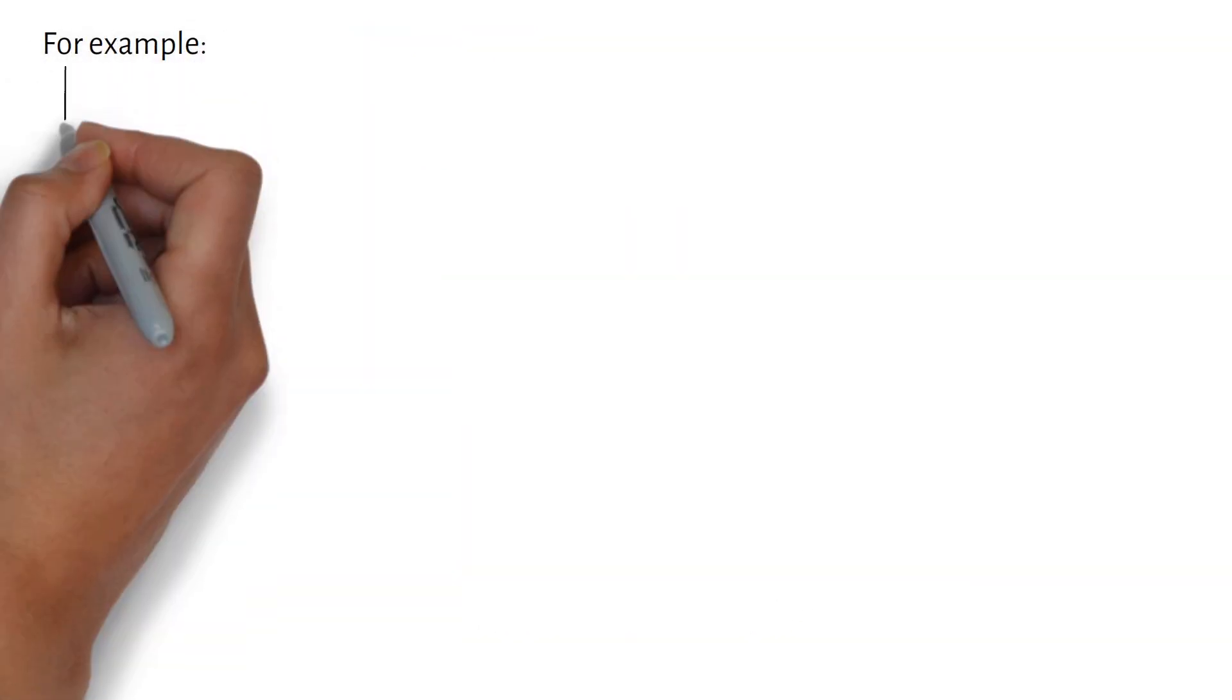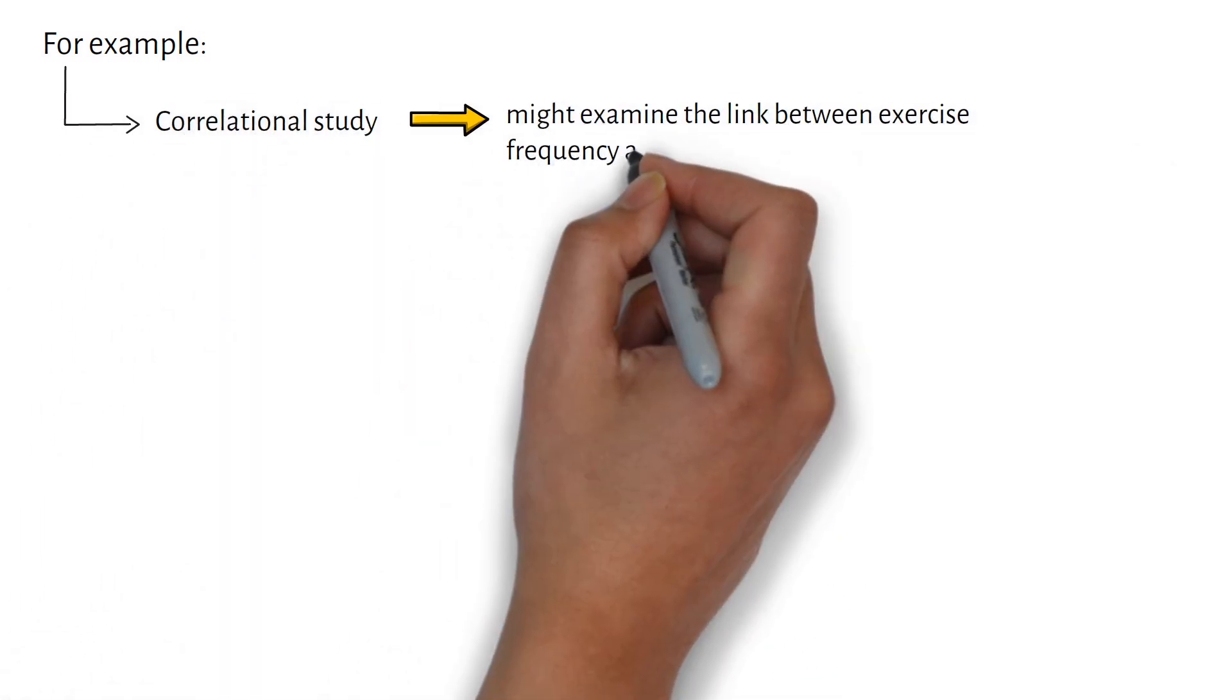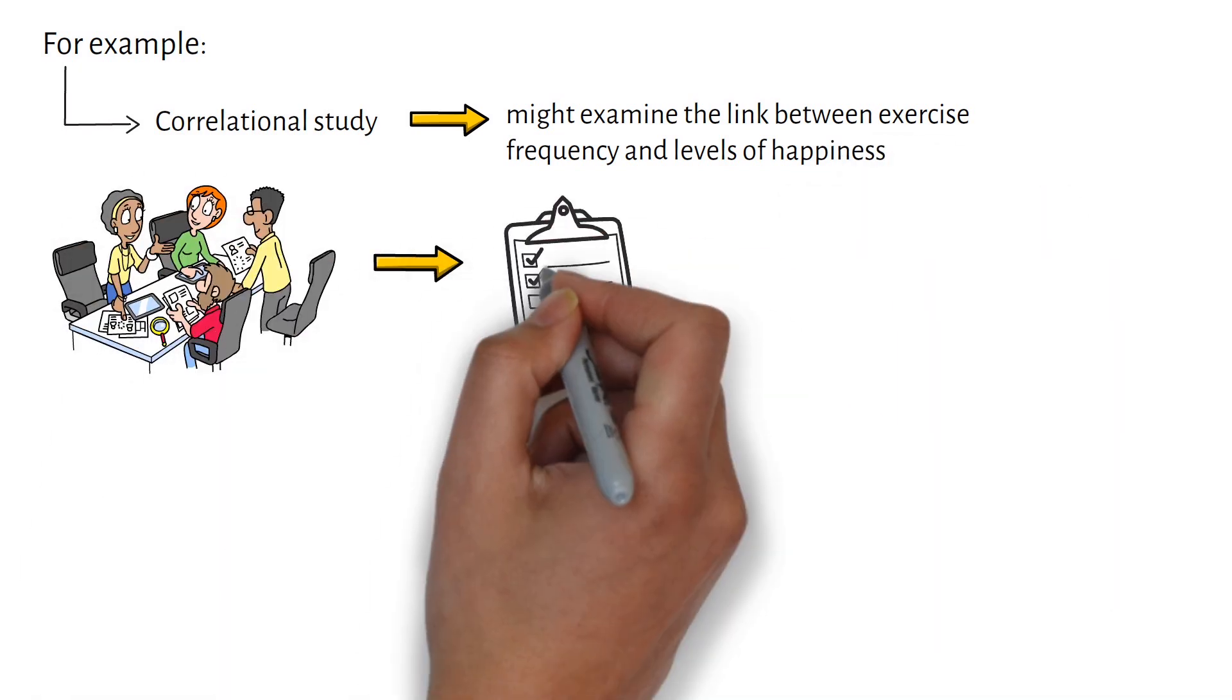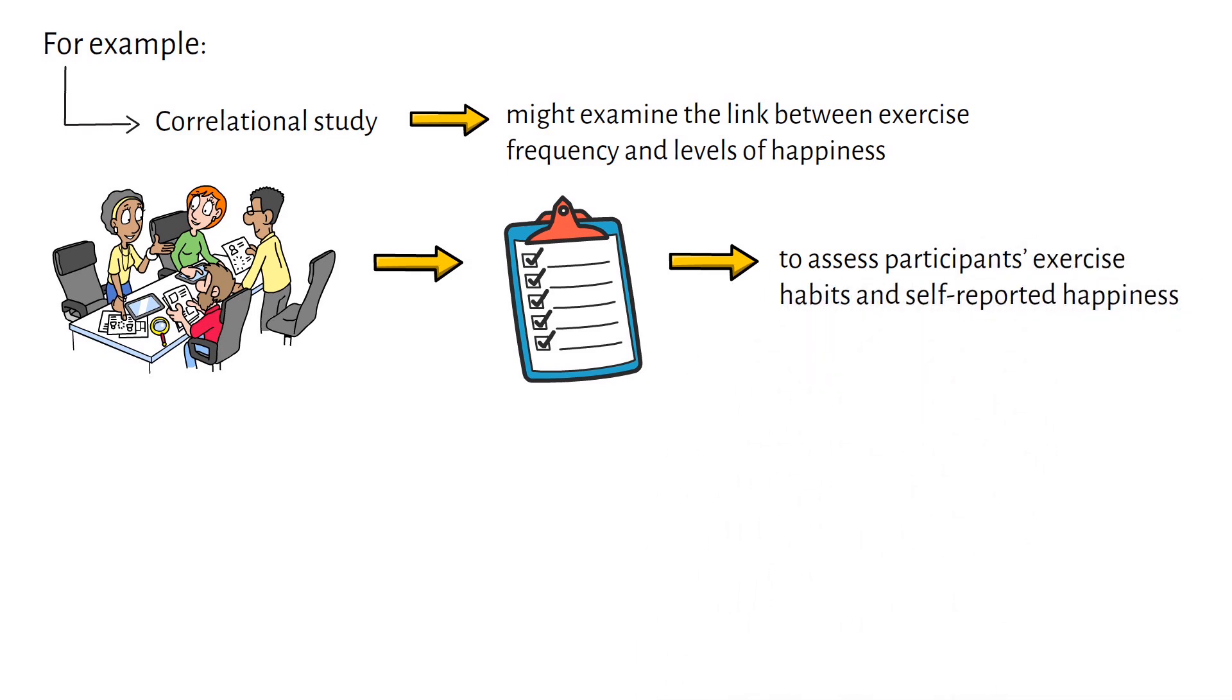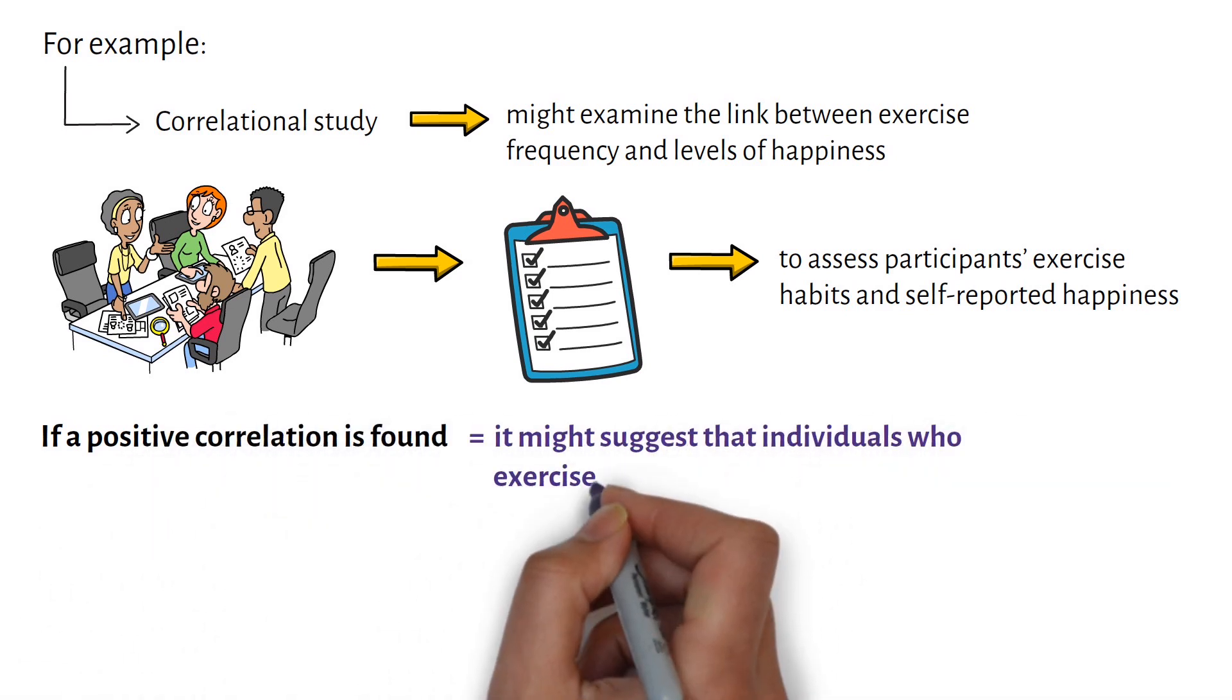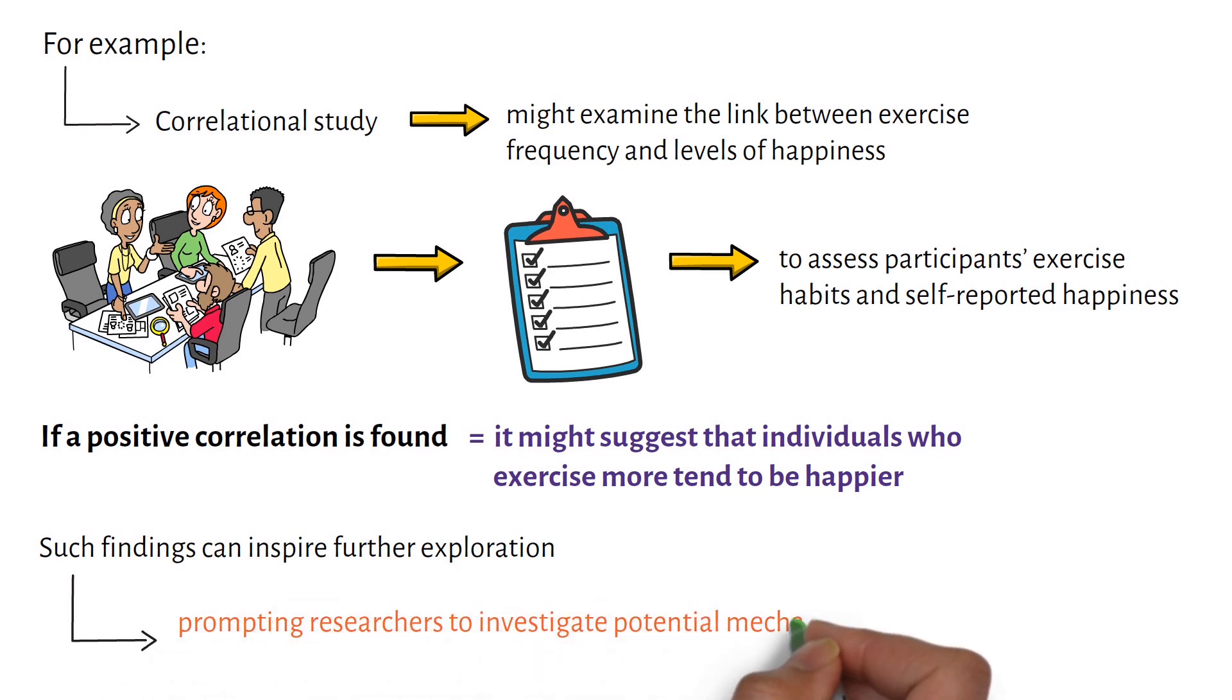For example, a correlational study might examine the link between exercise frequency and levels of happiness. Researchers could use questionnaires to assess participants' exercise habits and self-reported happiness. If a positive correlation is found, it might suggest that individuals who exercise more tend to be happier. Such findings can inspire further exploration, prompting researchers to investigate potential mechanisms or design interventions based on the observed relationship.